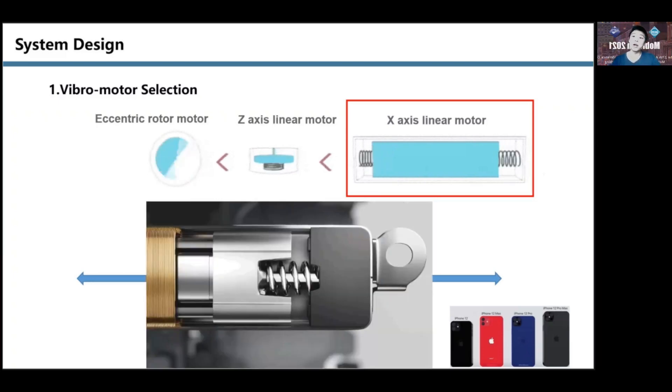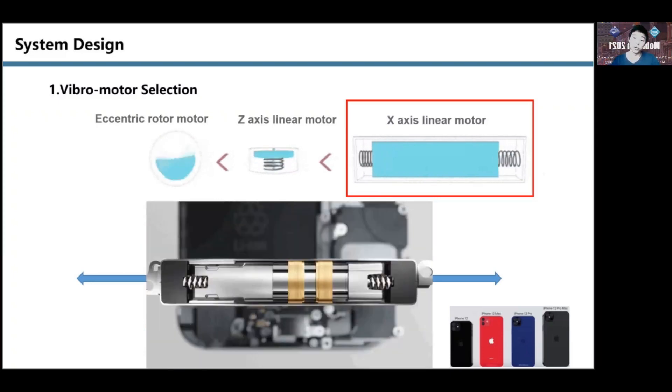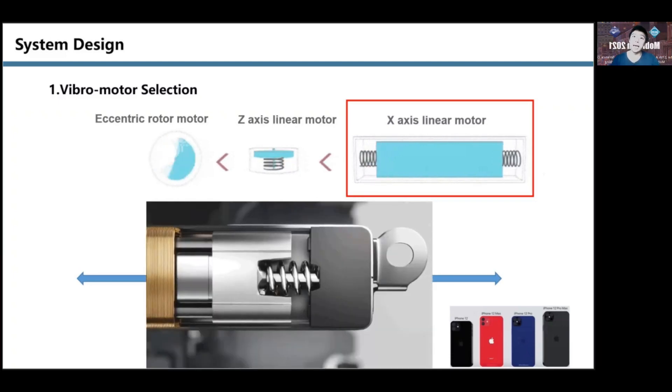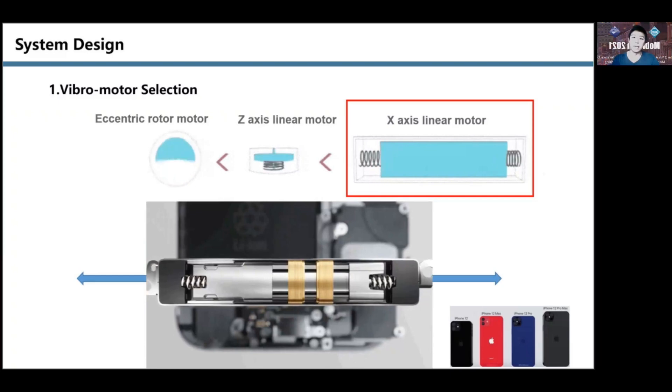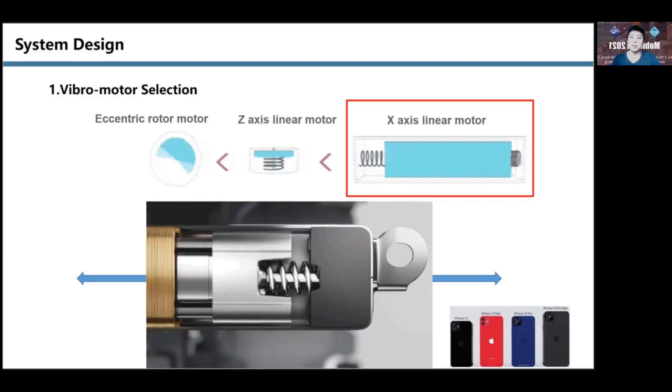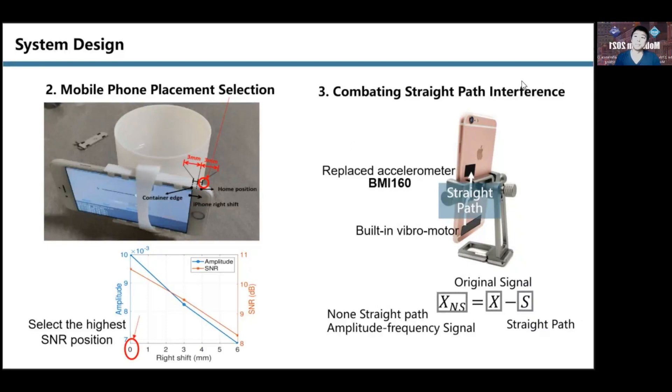It is available for multiple commercial mobile phones, including the iPhone 7, 8, 8+, X, and XR. We also adjusted the position of the phone and found the location with the highest signal-to-noise ratio. We also combat straight path interference. Details are given in the paper.